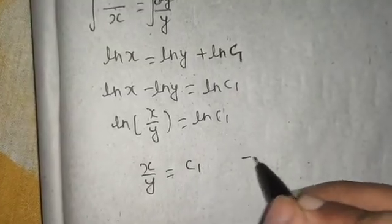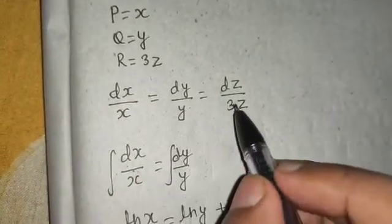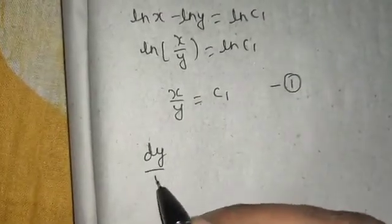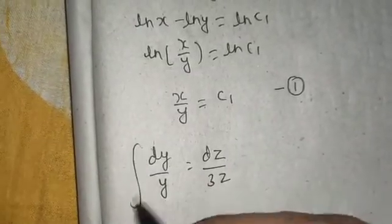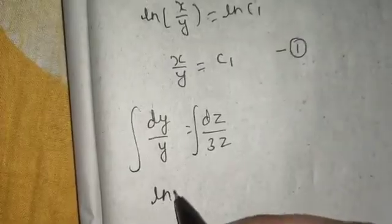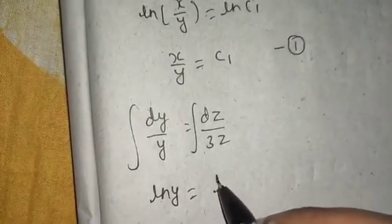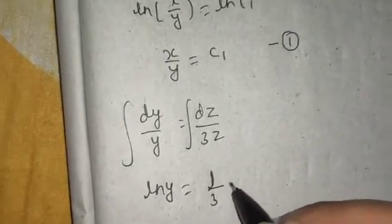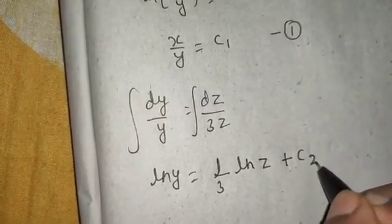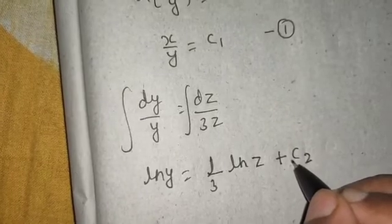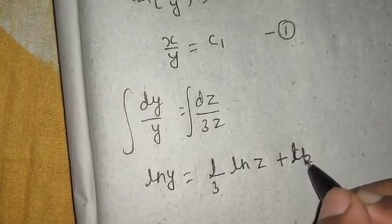Similarly, equating second and third, which is dy by y equals to dz by 3z. If you integrate this both side, you will get ln y equals to 1 by 3 ln z plus let's say that ln C2.